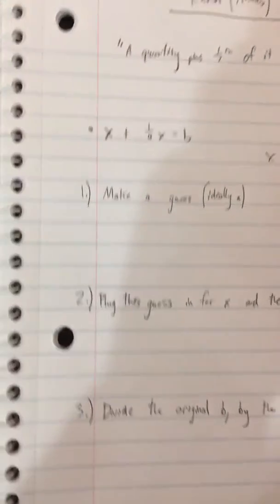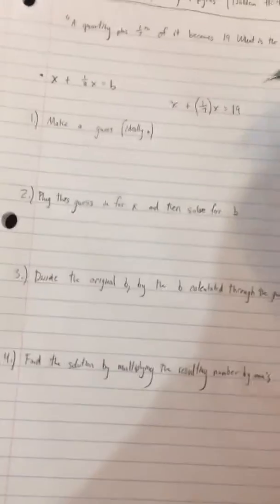And then we want to solve for, actually, it does not equal b. It equals 19. 19 is our b. And so we want to solve for x.